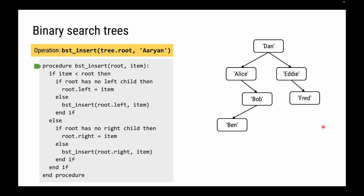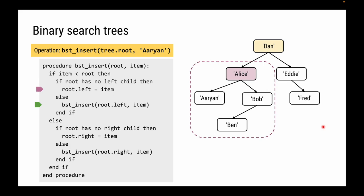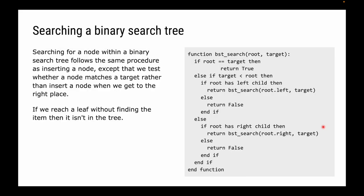Finally, let's add Arian. Arian is less than Dan, so we go left. Alice already occupies the position, so we do another insertion from Alice. Arian is less than the root Alice, and the root has no left child, so we can insert Arian to the left of Alice. Process complete — our binary search tree has been built.